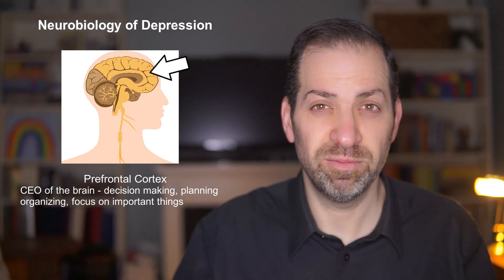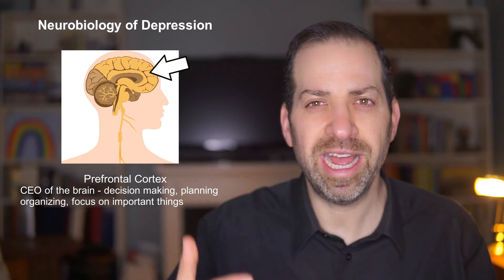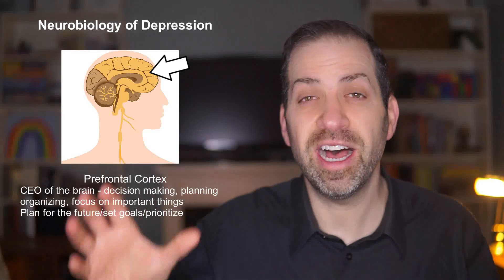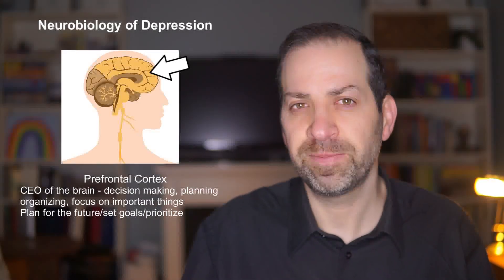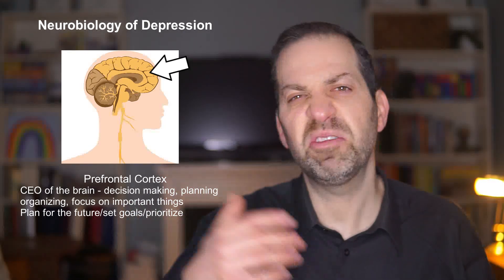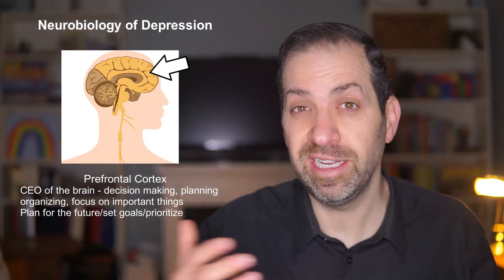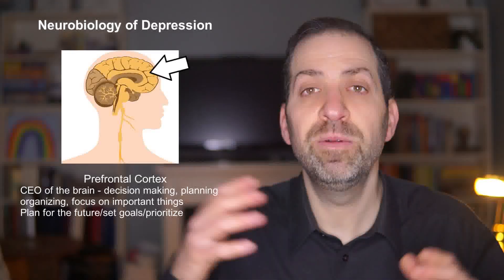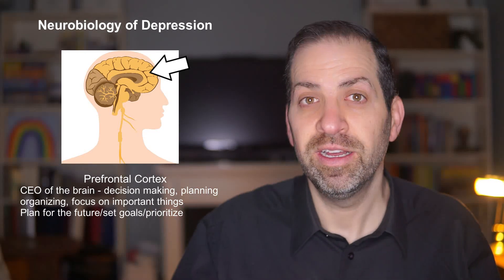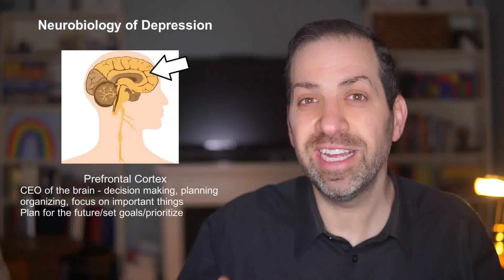Let's start with the prefrontal cortex. You can think of the prefrontal cortex kind of like the CEO of your brain, responsible for making important decisions, planning, organizing, and paying attention to things that matter. It helps us to think about the future, set goals, and make choices that align with our values and priorities. Now imagine that the CEO of a company suddenly loses interest in their job — they struggle to make decisions, they can't seem to focus on tasks that need to be done, and they lack motivation to do anything. This is a little bit like what happens in the brains of people with depression: the prefrontal cortex isn't functioning as well as it should.